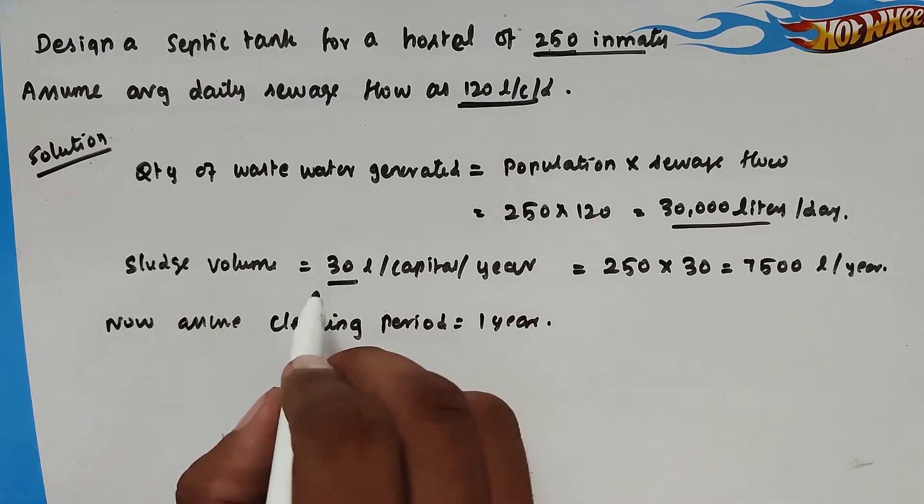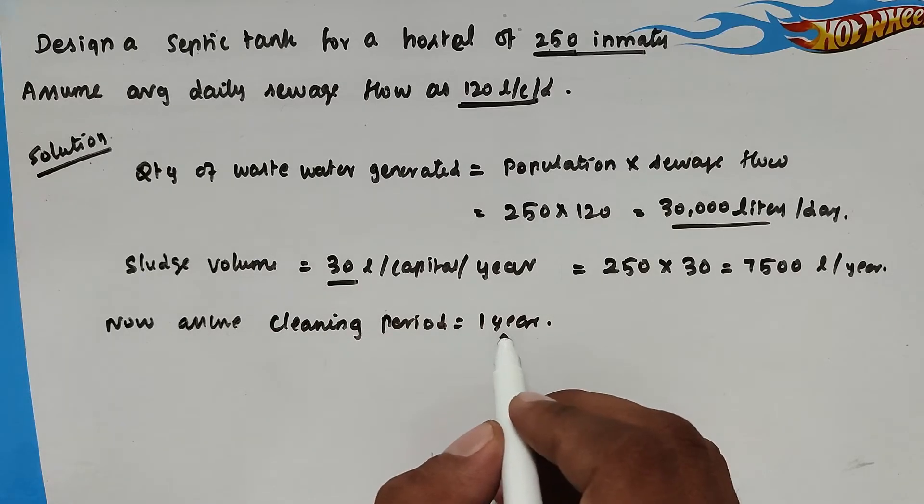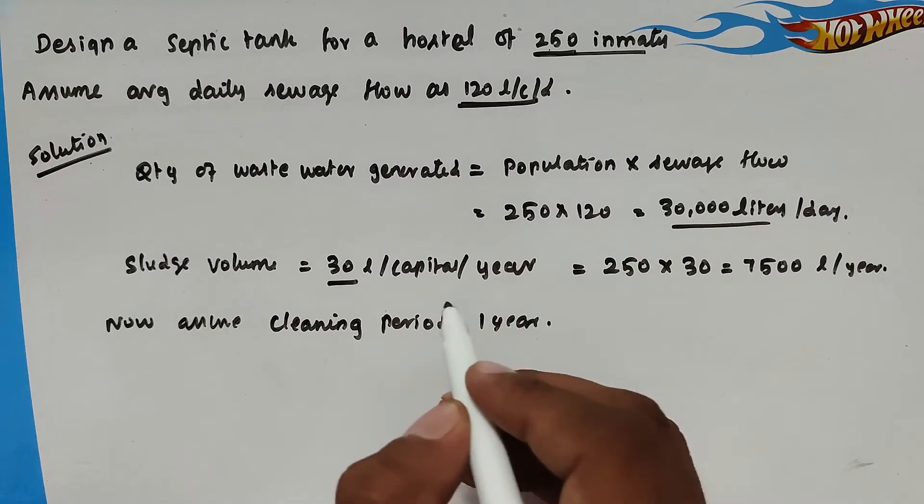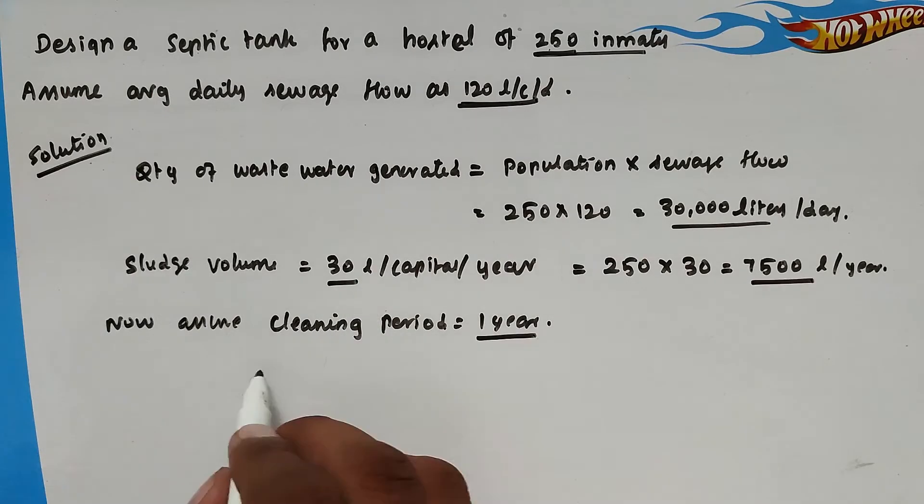Now we can assume cleaning period is 1 year. If we assume the cleaning period is 2 years, the sludge volume will be divided by 2 because in 1 year, 2 times the sludge will be cleared. So now,